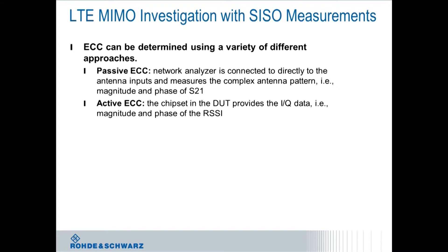We can determine the ECC with our systems using a variety of different approaches. From a high level, we are looking at two basic approaches: the passive approach, where we just look at the antenna by itself using a network analyzer and determining the complex antenna radiation pattern of the device — basically complex S21 measurements. And in the active approach, we use the device under test and collect from the chipset the complex IQ data, meaning the complex RSSI that the baseband is going to deliver.